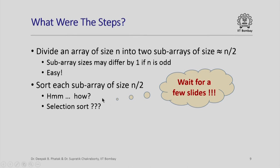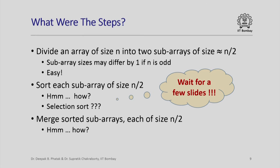For the time being, let us assume that we can magically sort these two subarrays of size n/2. As we have already seen, just having two sorted subarrays does not help us get the original sorted array. So we have to merge these two sorted subarrays, each of size n/2. The question now is: how do we do that? Let us look at how we might merge two sorted subarrays each of size n/2.